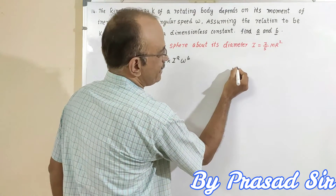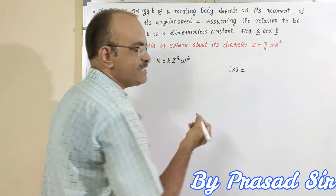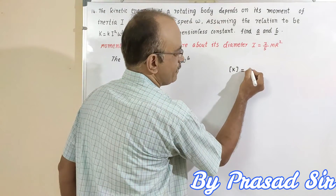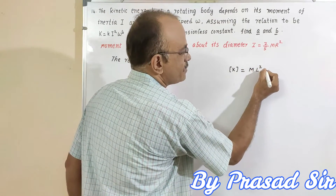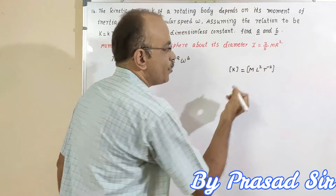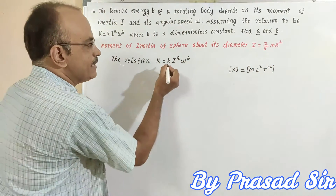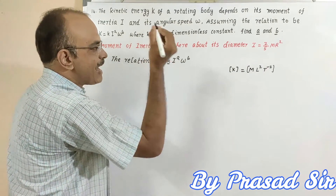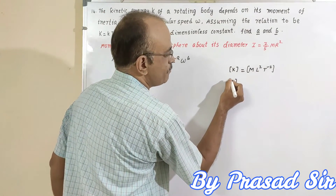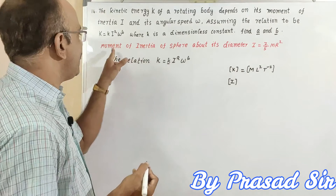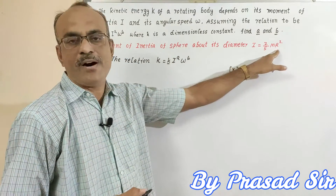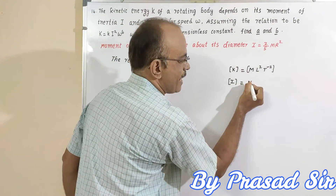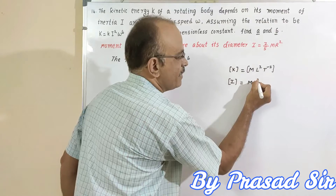K is nothing but kinetic energy. The dimensional formula for kinetic energy is M L squared T to the power of minus 2. The small k is a dimensionless constant, so no need to write dimensions for it. I is the moment of inertia — given for a sphere as 2/5 m r squared. So the dimensional formula for I is M L squared.